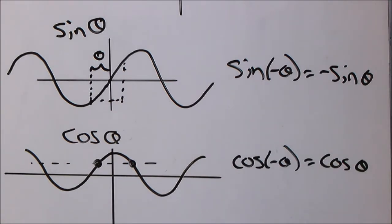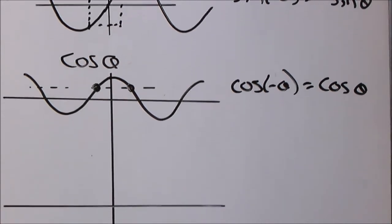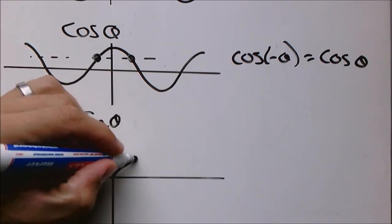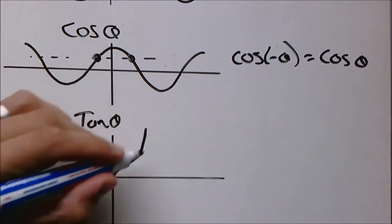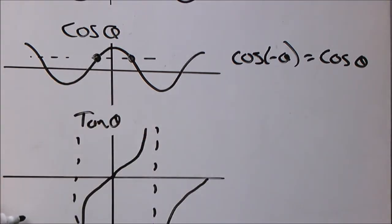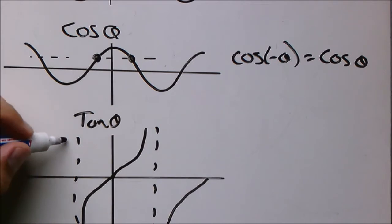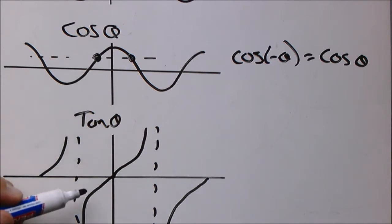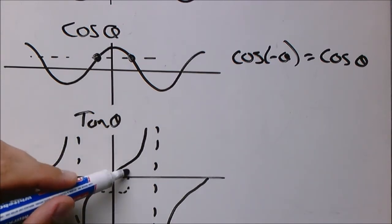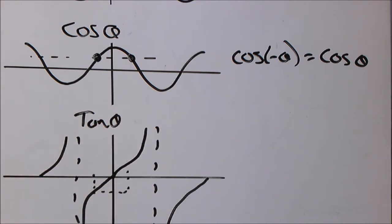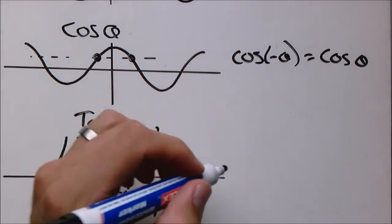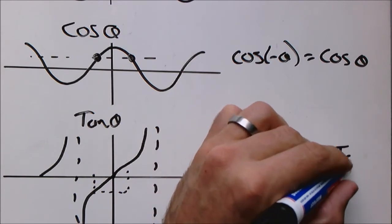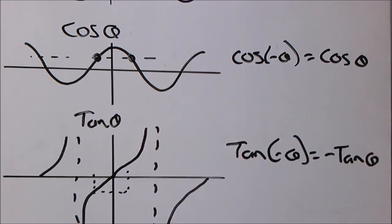Now we can do the same thing with the tan graph. You will notice that is also asymmetrical, like the sin graph. So whatever the value is on one side, it will be minus one times that value on the other side of the y axis. Based on this graph, we can see this pattern, just like we saw with the sin graph.